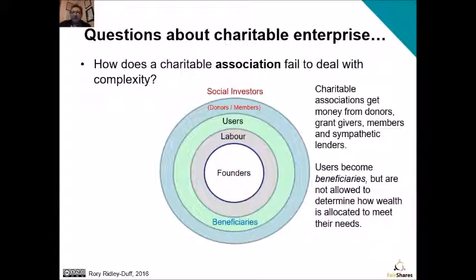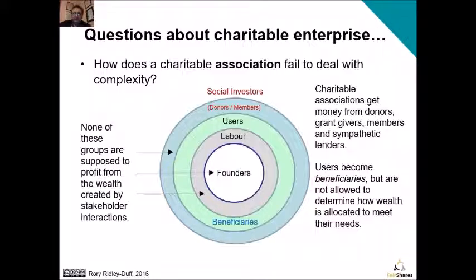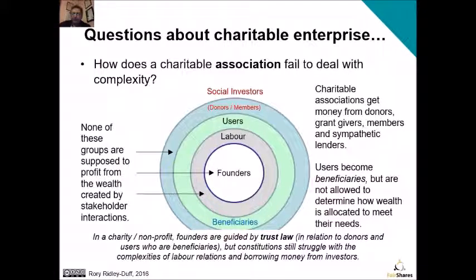Now let's see how a charitable association fails to deal with complexity. Charitable associations get money from donors, grant givers, members and sympathetic lenders. The users of the charitable association become its beneficiaries and they're typically excluded from determining how the wealth that has been given to the charity is allocated to meet their needs — this comes under the purview of trustees. So founders, labour and those donors and members are none of them supposed to profit from the wealth created by stakeholder interactions; it is supposed to go to the beneficiaries. In a charity and a non-profit, the founders and later on the trustees have to be guided by trust law. The constitution still struggles with the complexities of labour relations and it can still create barriers to borrowing money from investors.